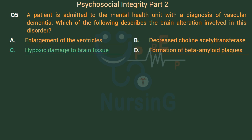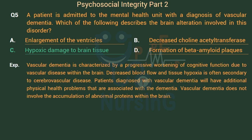The right answer is Option C: Hypoxic damage to brain tissue. Vascular dementia is characterized by a progressive worsening of cognitive function due to vascular disease within the brain. Decreased blood flow and tissue hypoxia is often secondary to cerebrovascular disease. Patients with vascular dementia have additional physical health problems associated with the dementia. Vascular dementia does not involve the accumulation of abnormal proteins within the brain.